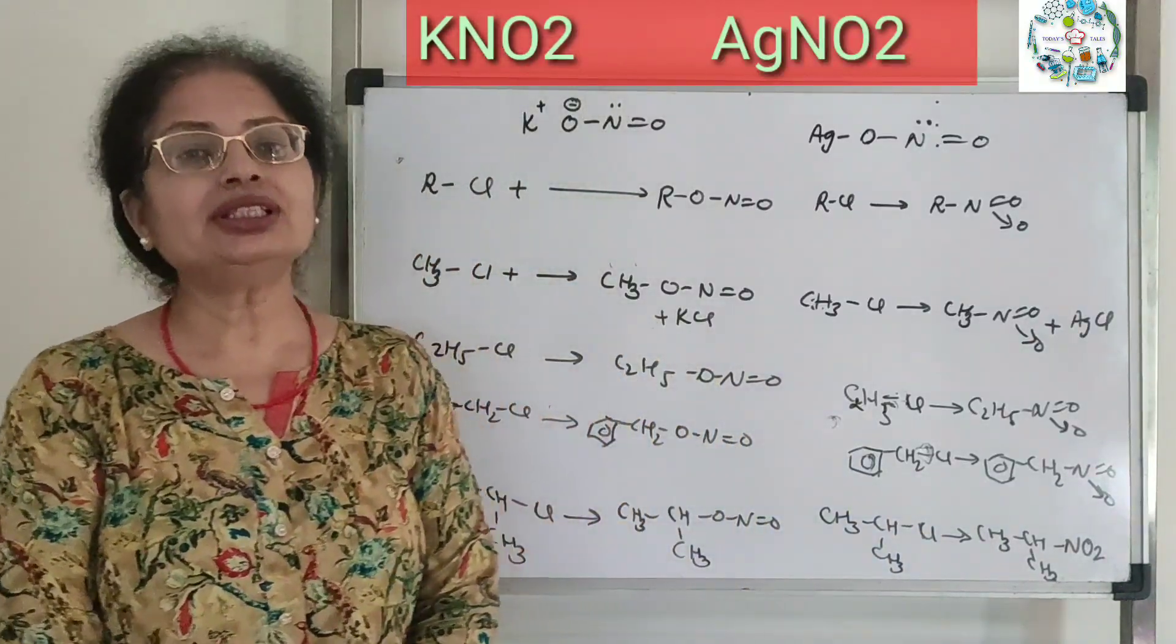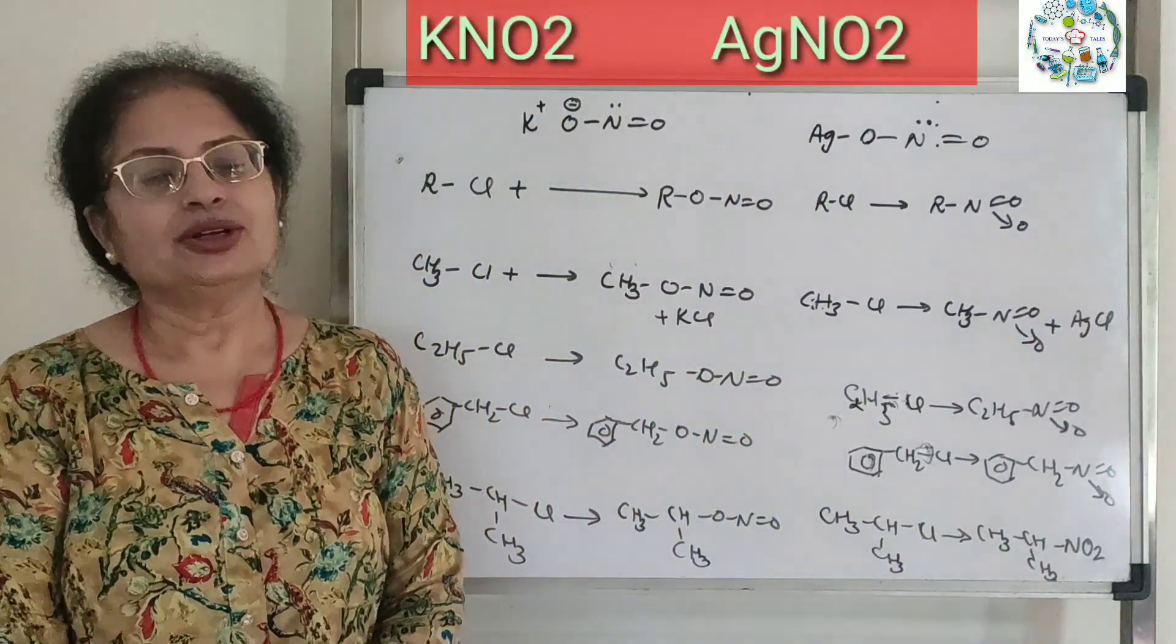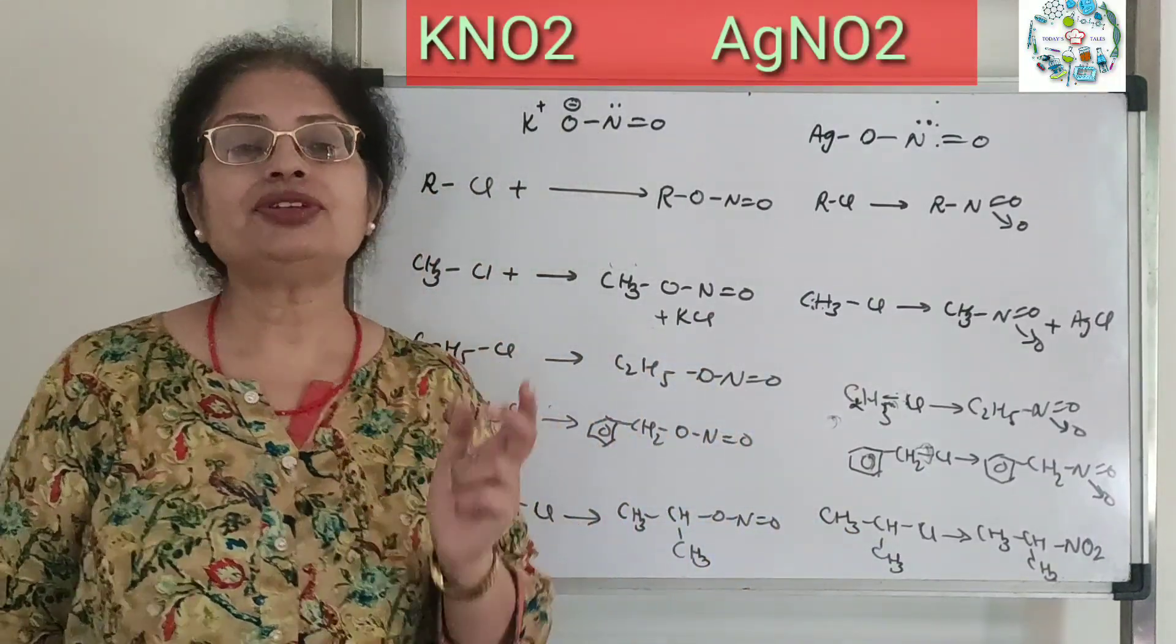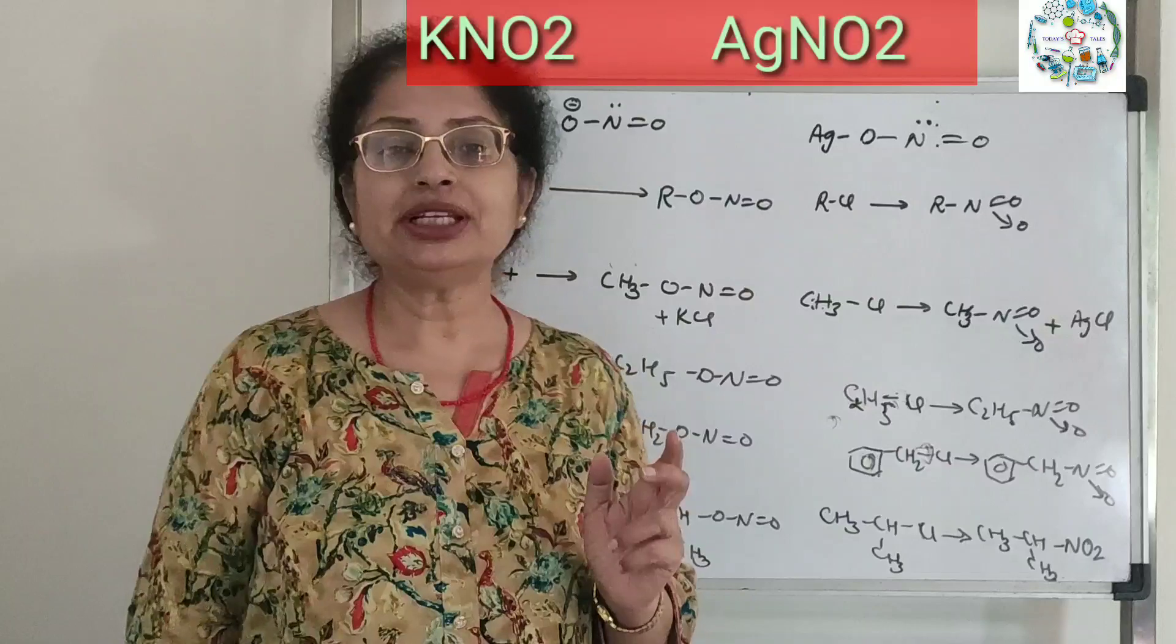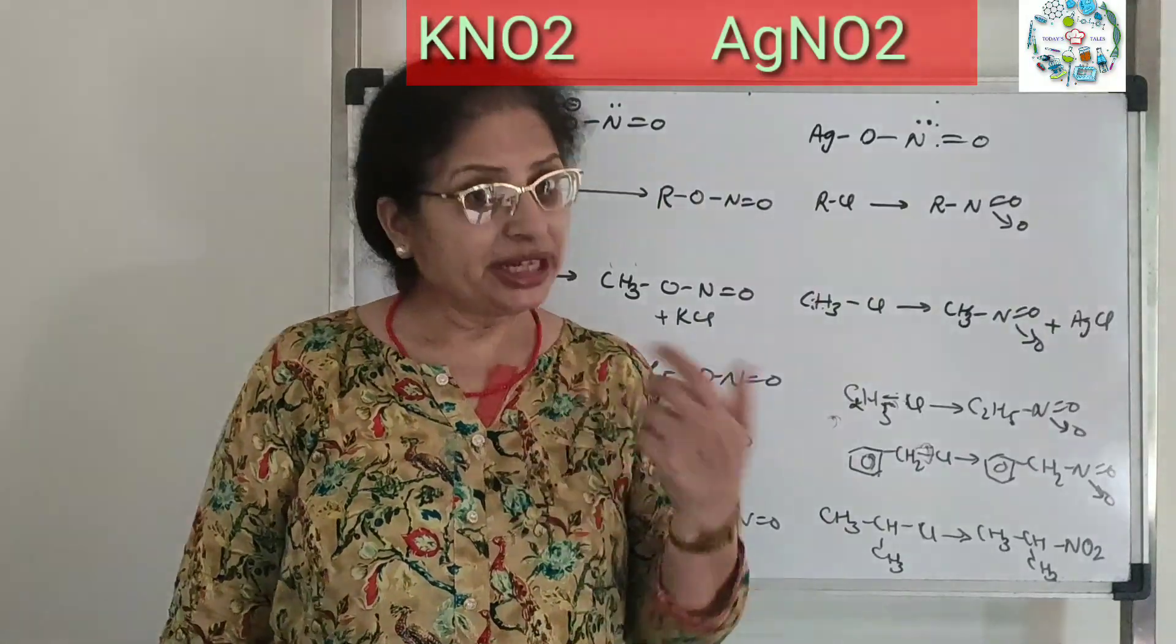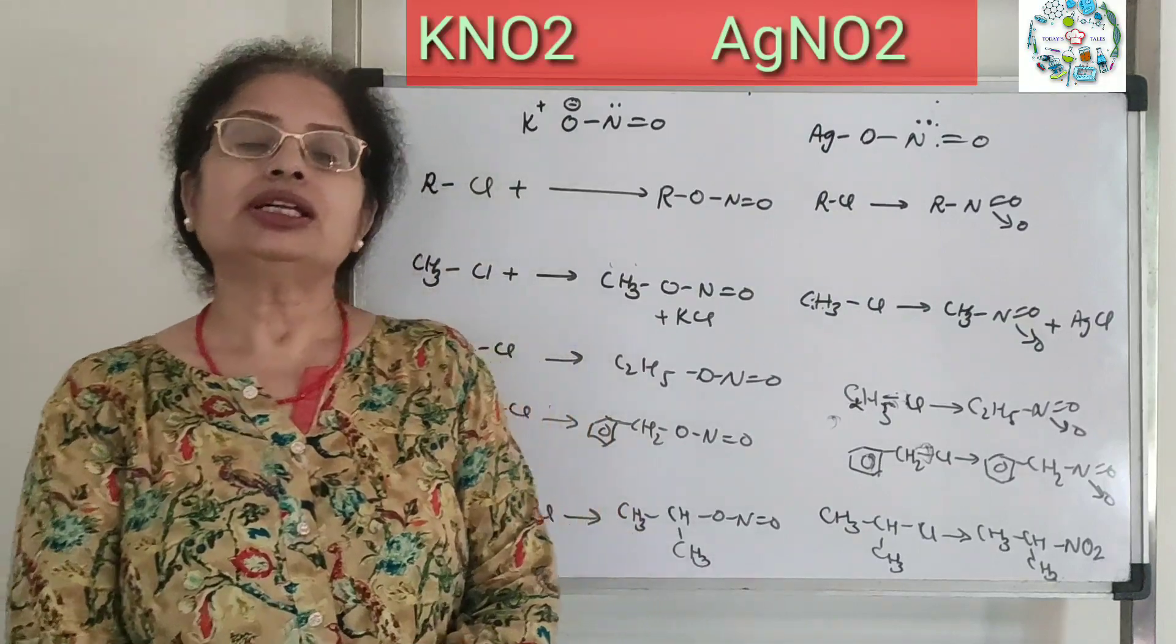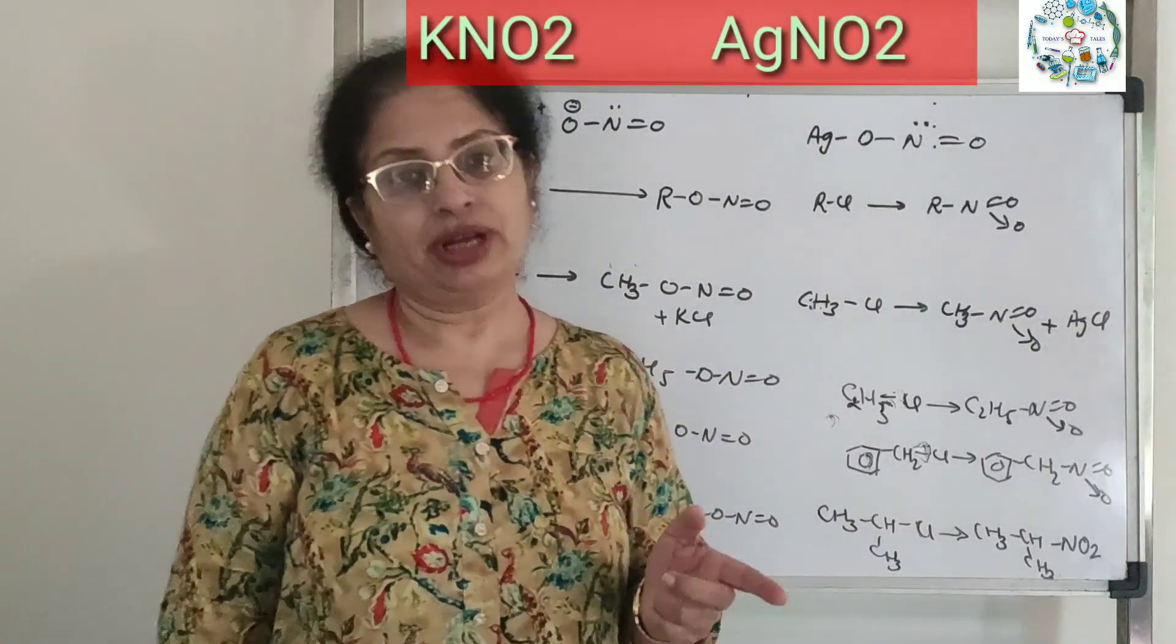How do they react with haloalkanes? Like potassium cyanide and silver cyanide, we saw that there is a difference between their reactivity. When we react haloalkanes with potassium cyanide, we get cyanoalkanes, and on reaction with silver cyanide, we get isocyanoalkanes.